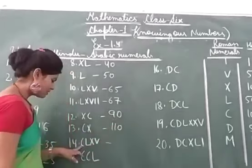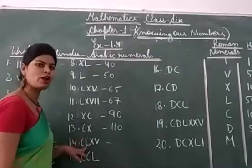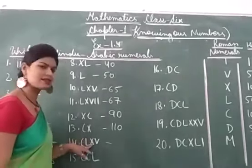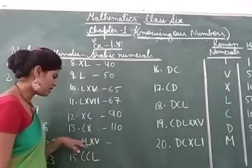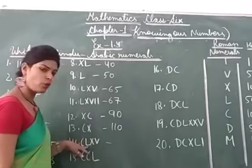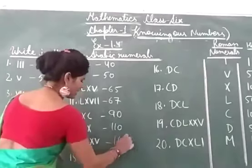So the next is CLXV: C is the symbol of 100, L is the symbol of 50, X is the symbol of 10 and V is the symbol of 5, so 100 plus 50 is 165.